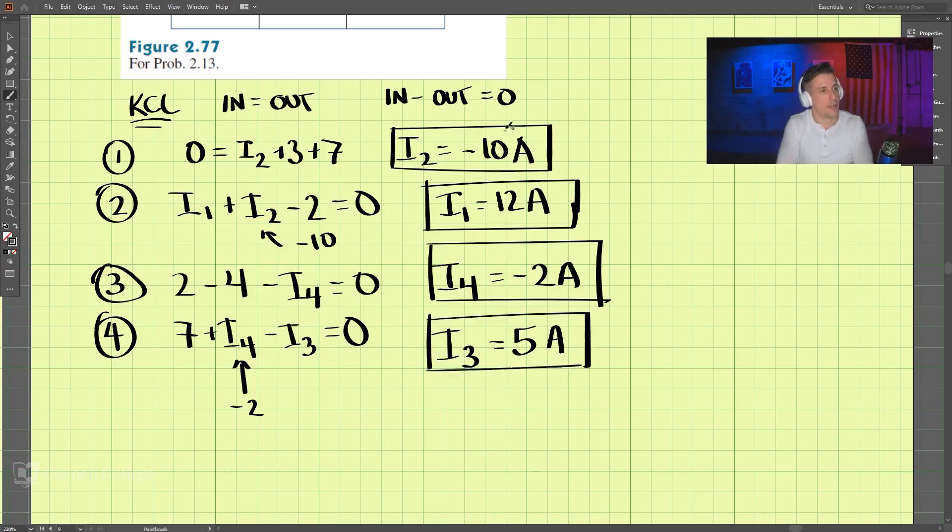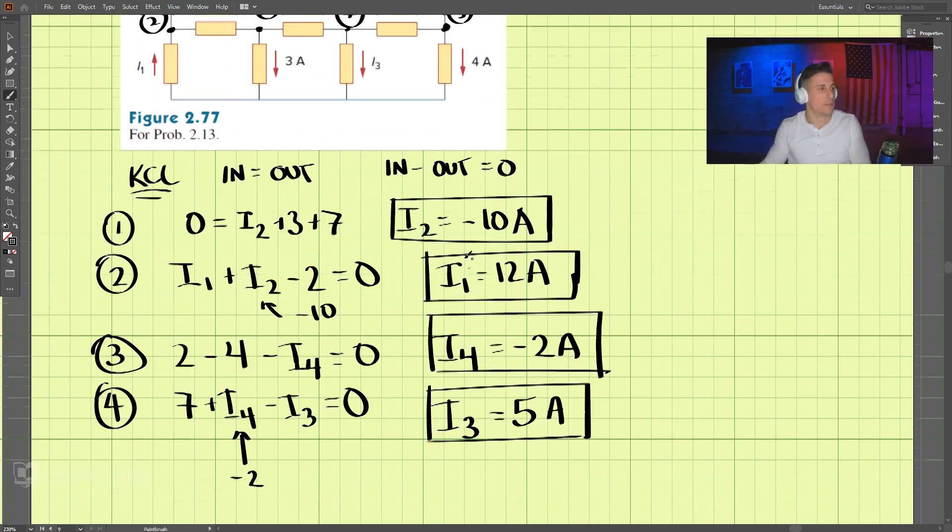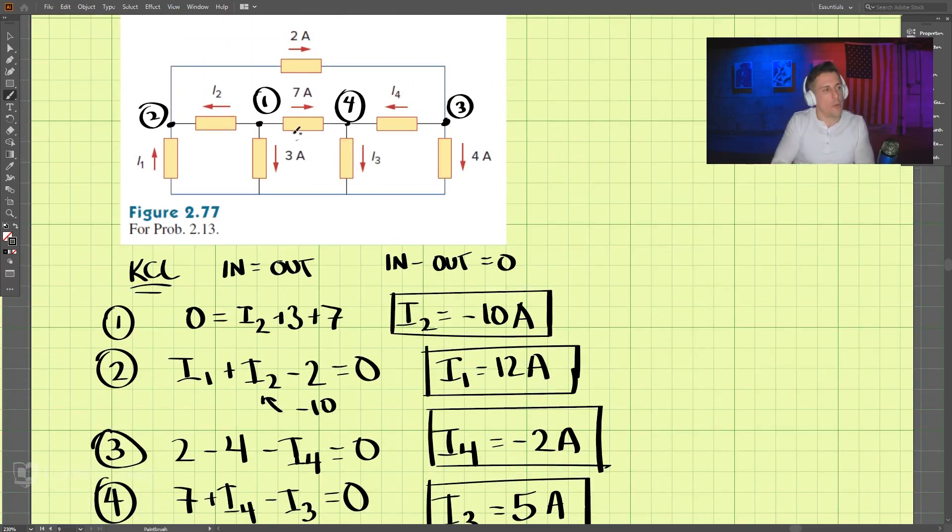So we have I1, I2, I3, and I4. And the way we chose these was we chose 1 first because there is 1 unknown, I2. And then we move to 2 because there is 1 unknown, I1. Then to 3, and then to 4.